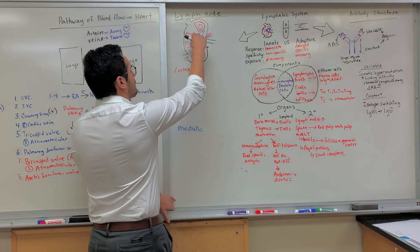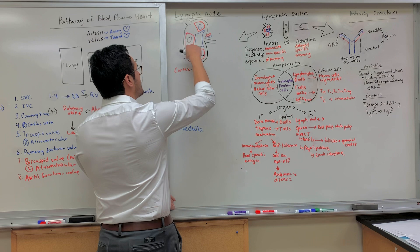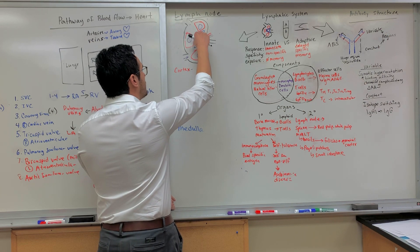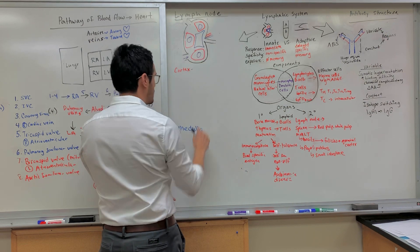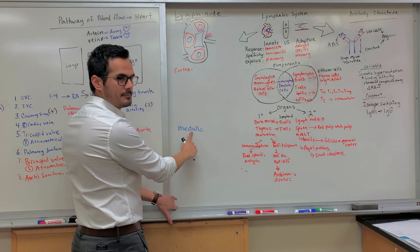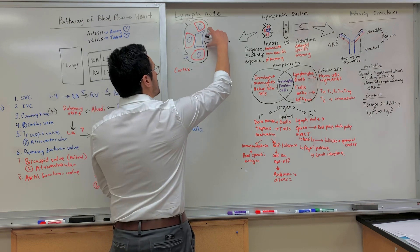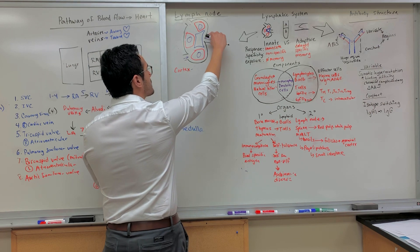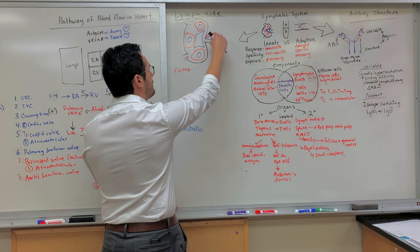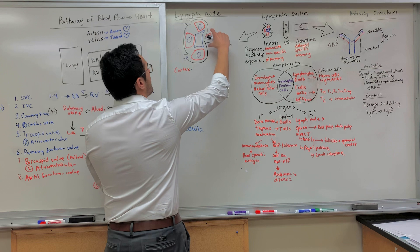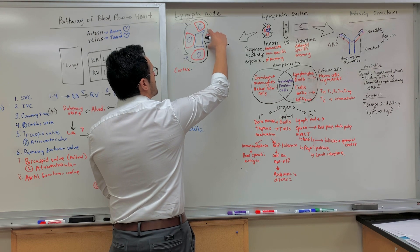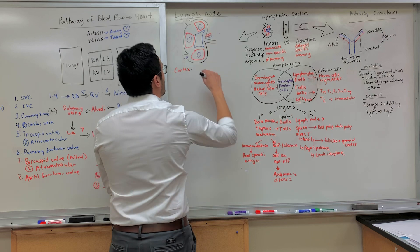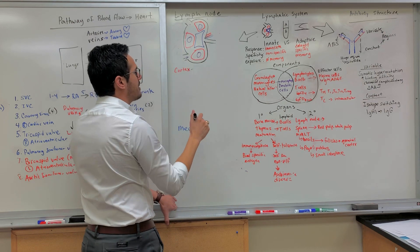The different regions of the lymph node: this part here in red is what's known as the cortex, and this part here in blue is what's known as the medulla. The region where you have the efferent vessel as well as arteries and veins is all within a region known as the hilum. That's the general anatomy.